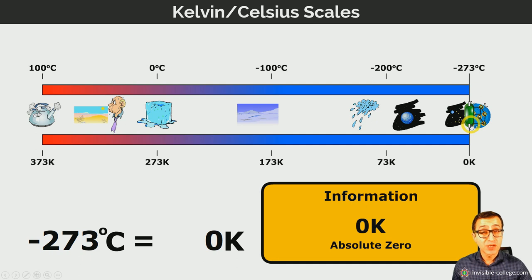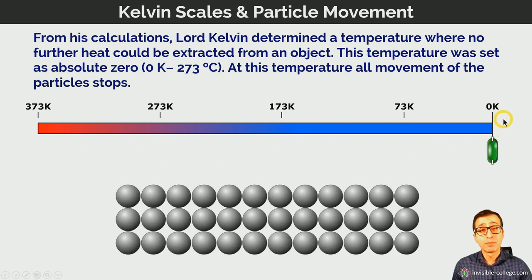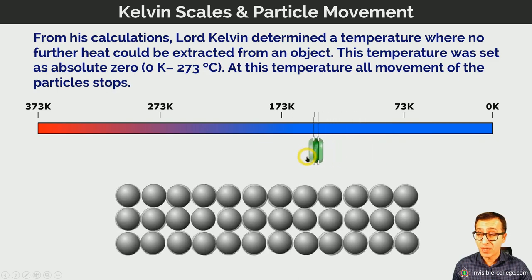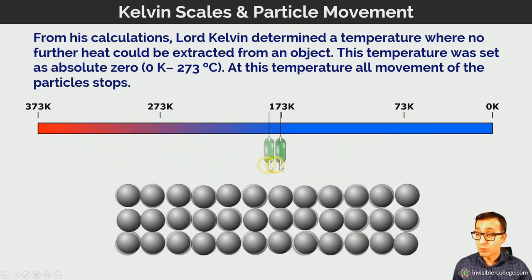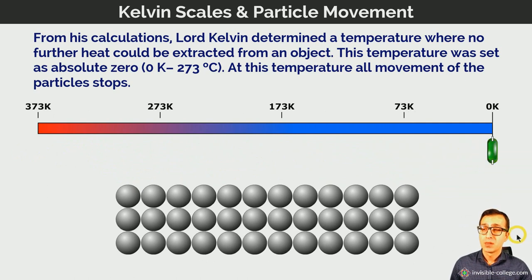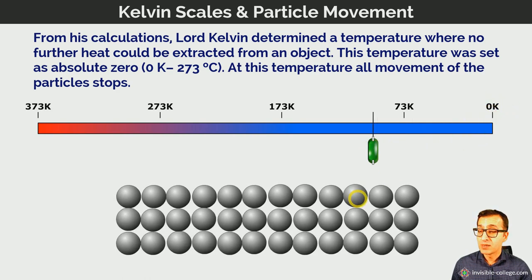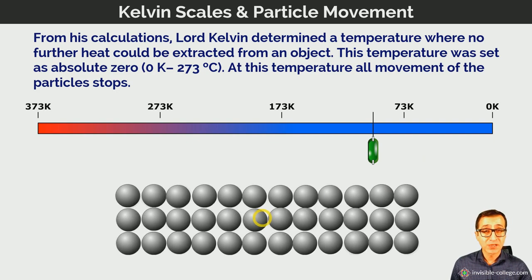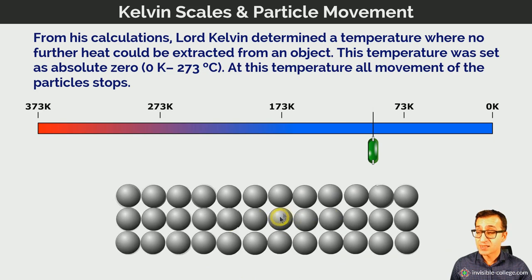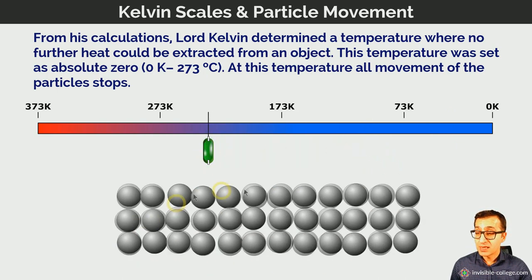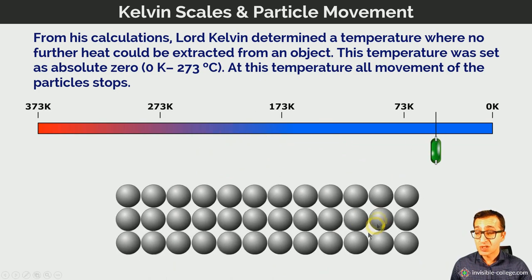The Kelvin scale is called the absolute scale of temperature because it relates to the actual theoretical definition of temperature, which is connected to the average kinetic energies of particles. At zero Kelvin, the particles have zero kinetic energy — you can't have negative numbers on the Kelvin scale. As the temperature of a substance increases from zero Kelvin, the particles are moving faster and faster on average. At any given temperature above zero Kelvin, some particles are moving faster and some slower, but the average kinetic energy of the particles at that temperature defines the value of that temperature on the Kelvin scale.